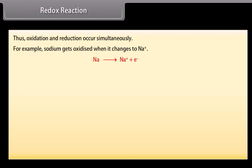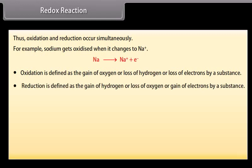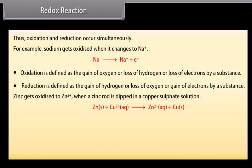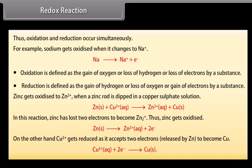Oxidation is defined as the gain of oxygen, or loss of hydrogen, or loss of electrons by a substance. Reduction is defined as the gain of hydrogen, loss of oxygen, or gain of electrons by a substance. For example, zinc gets oxidized to Zn²⁺ when a zinc rod is dipped in copper sulfate solution — zinc loses two electrons and is oxidized, while Cu²⁺ accepts two electrons released by Zn to become Cu, and is thus reduced.